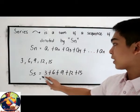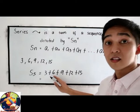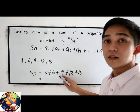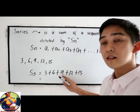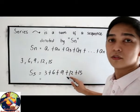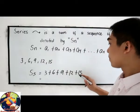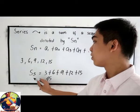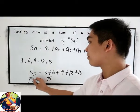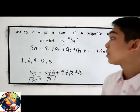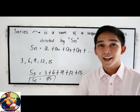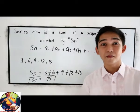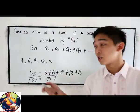So, 3 plus 6 is 9, plus 9 is 18, plus 12 is 30, plus 15 is 45. So our S5 is 45. Again, a series is simply a sum of our sequence.